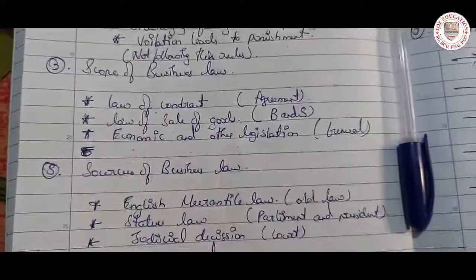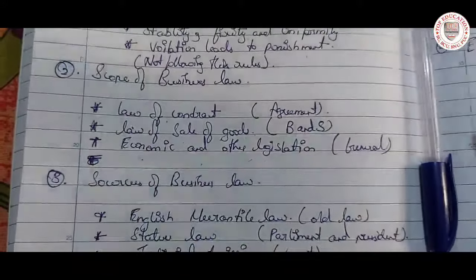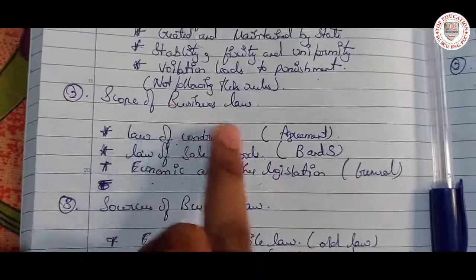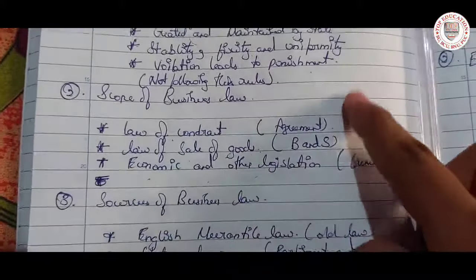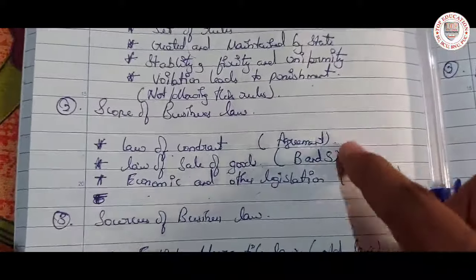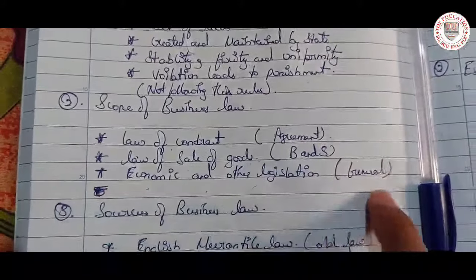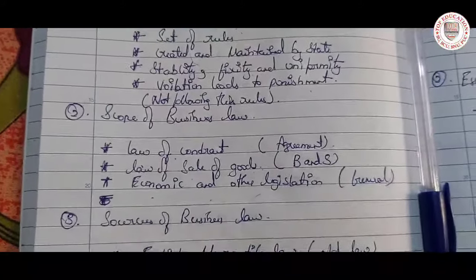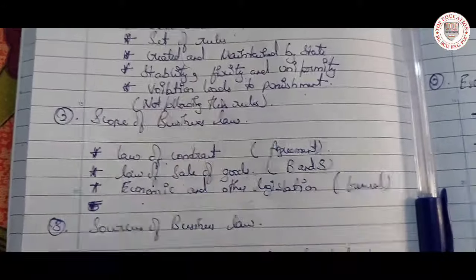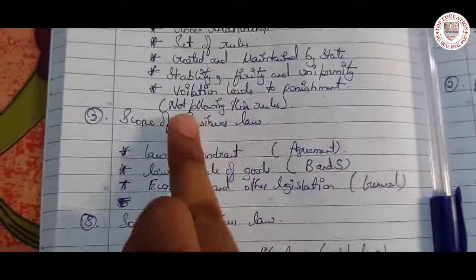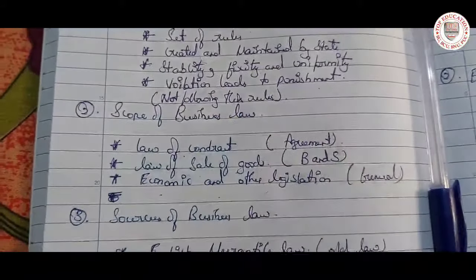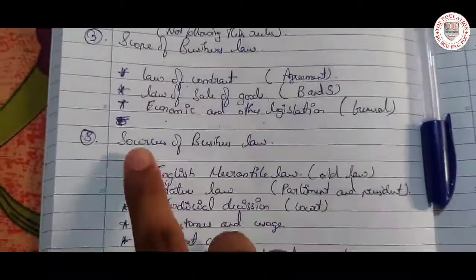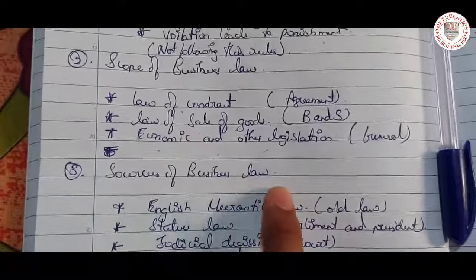Economic and other legislation — the general public should follow these rules and regulations, and the business party should also follow these rules and regulations. This is also part of the scope of business law.